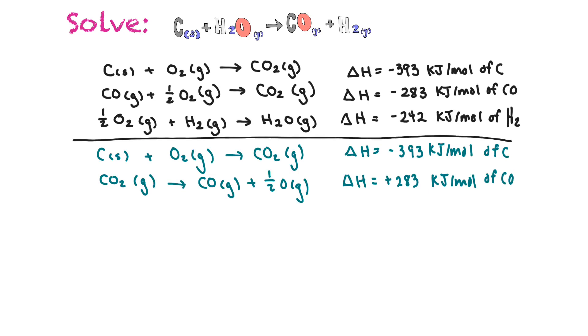And then our third one, we wanted to flip too. So we're going to have H2O gaseous water vapor plus 1 half, oops, produces 1 half O2 gaseous plus H2 gaseous. And we have to change our delta H again to be positive. So it's positive 242 kilojoules per mole of H2.